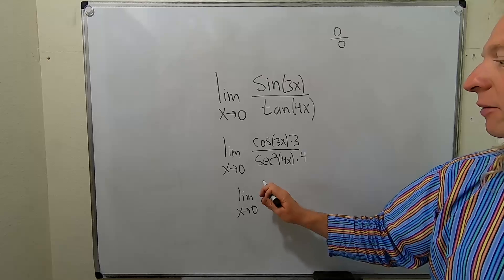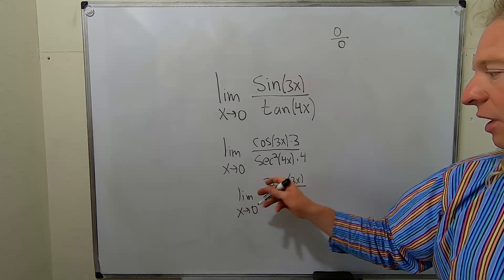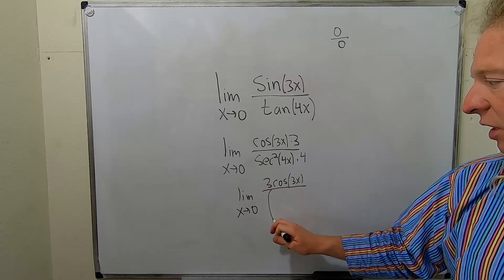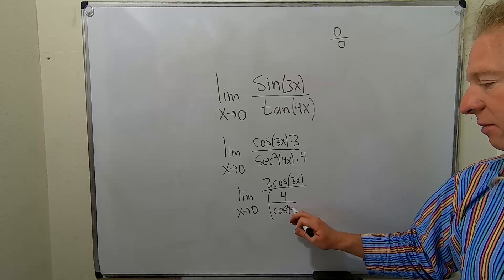I'll put the 3 in the front. So this is 3 cosine of 3x over... Let's write this as follows. This is really 4 over cosine squared of 4x.